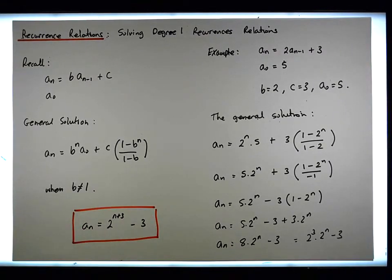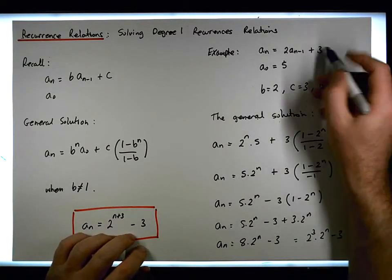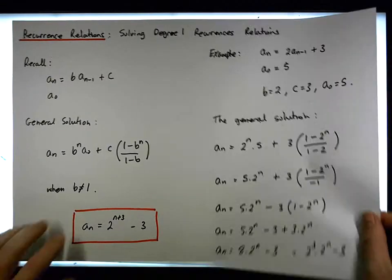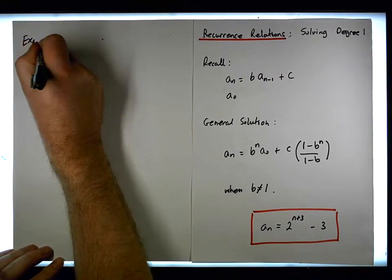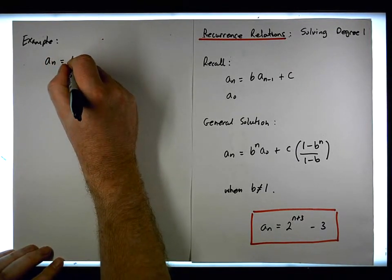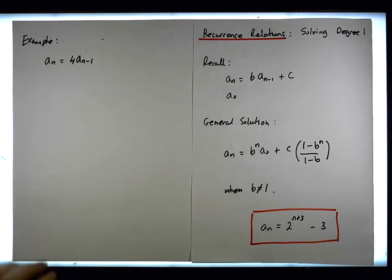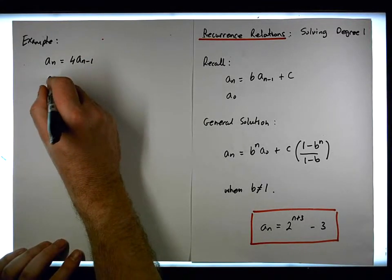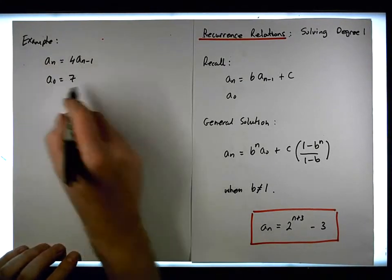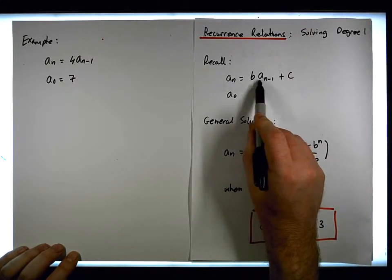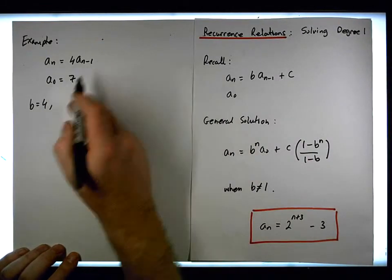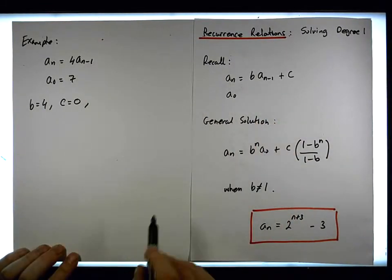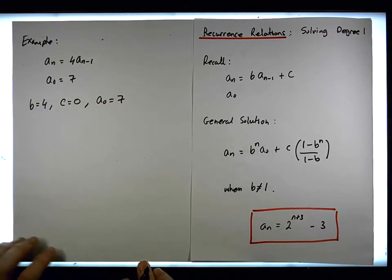Just keep in mind that this was a non-homogeneous recurrence because the constant c is not equal to zero. Now let's have a look at another example involving a homogeneous system. We have a_n equals four times a_{n-1}. This time the constant c is equal to zero. Writing out what we need for the formula: b is four, c is zero, and a_0 is equal to seven. So using our solution...